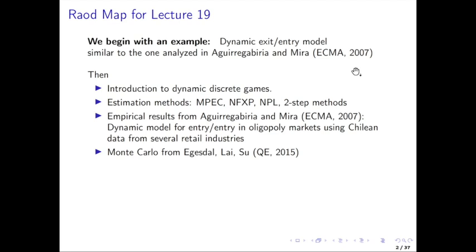We have already, in a previous lecture, covered the 2002 paper. So think of this current NPL as an extension to what we did in the previous lecture — very much the same idea, but a generalization. Likewise, the two-step estimators I've already talked about last time in our lecture on static games and previously on single agent dynamic models.